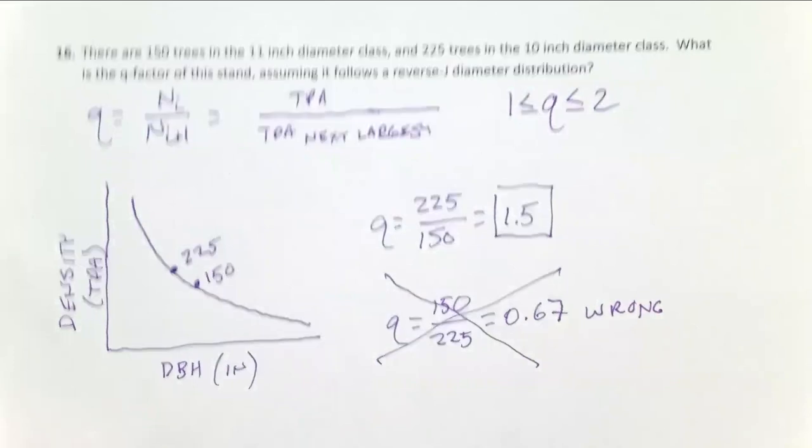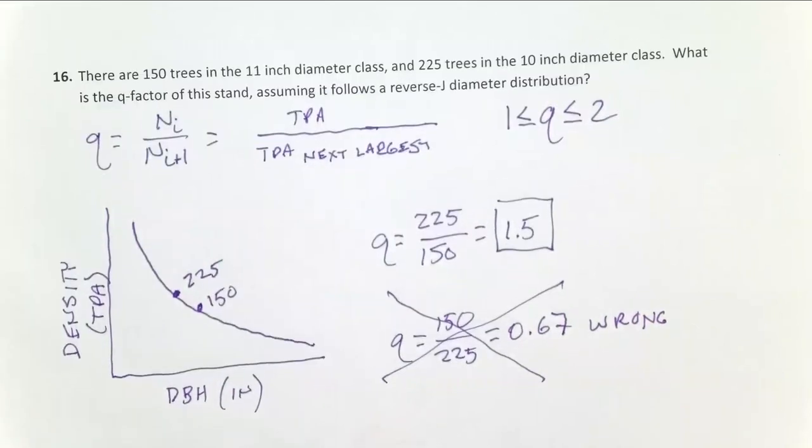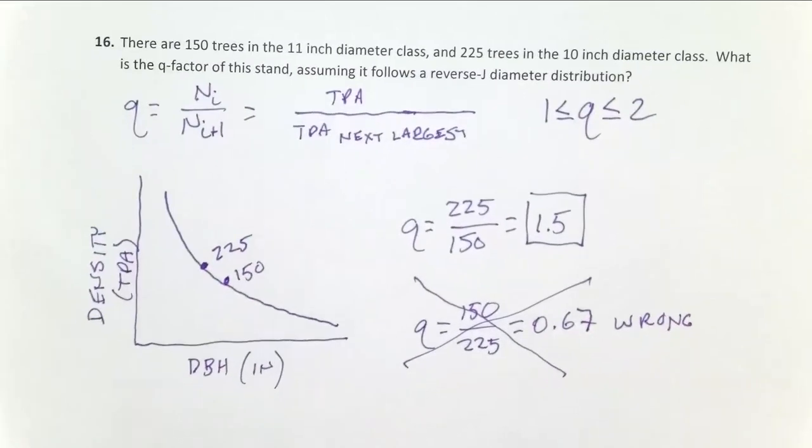So that's how you can calculate Q from given diameter distribution data. Thank you.